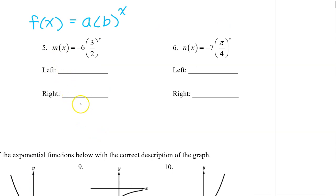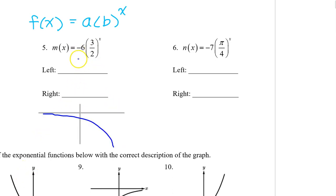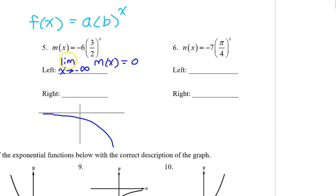Number five, begin by drawing the sketch. Because the b value is greater than one, this would be an exponential growth curve. Except because the a value is negative, the curve is reflected over the x-axis. Now we see that as we head towards the left, the graph of m of x is approaching the x-axis asymptotically. So the limit as x approaches negative infinity of m of x equals zero.